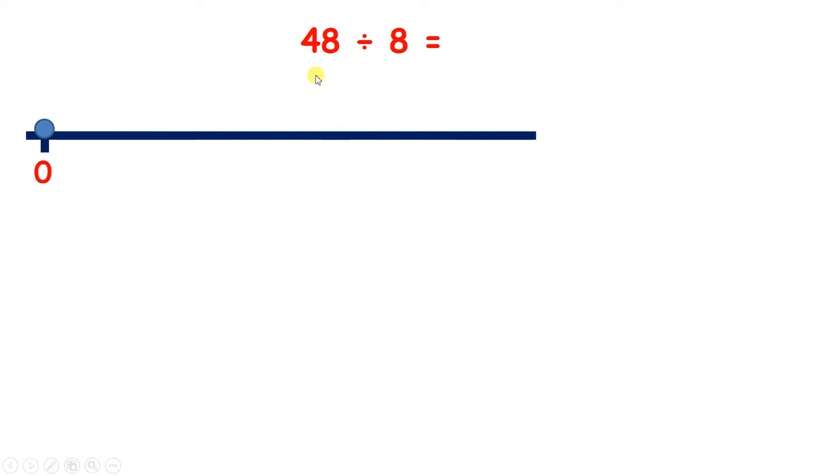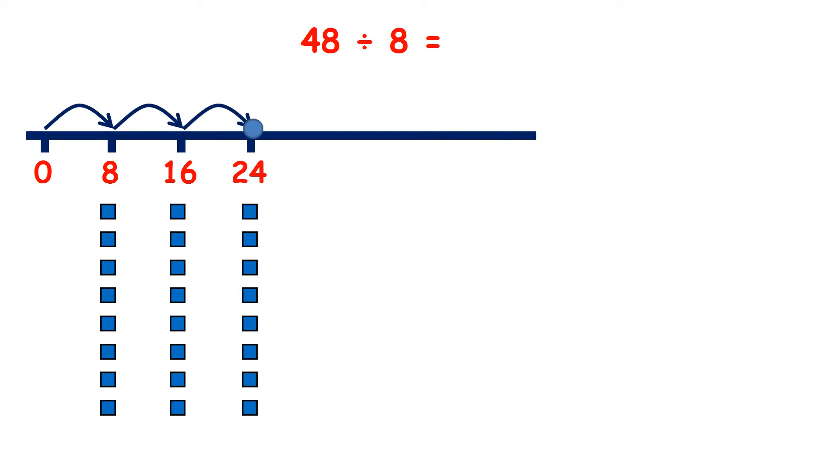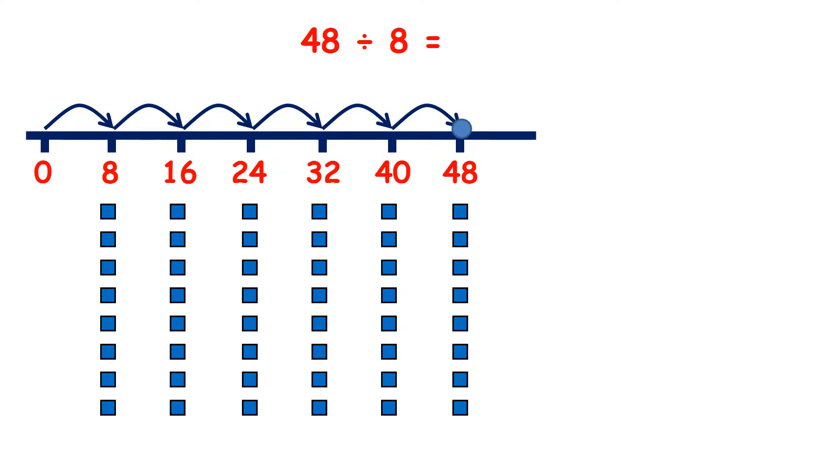So we start with 48 divided by 8. Let's count up in steps of 8 until we get to 48. 8, 16, 24, 32, 40, 48. So we've counted on 6 lots of 8. We've made 6 groups of 8. So 48 divided by 8 is 6.